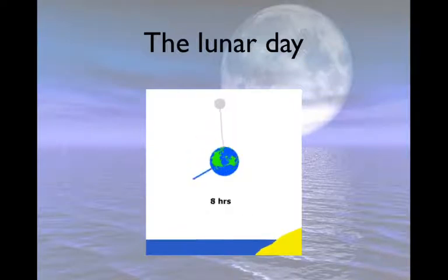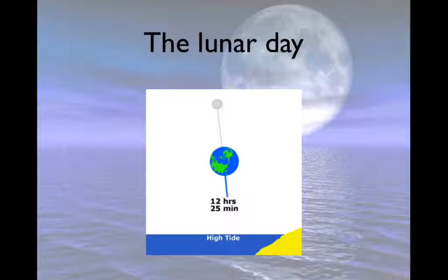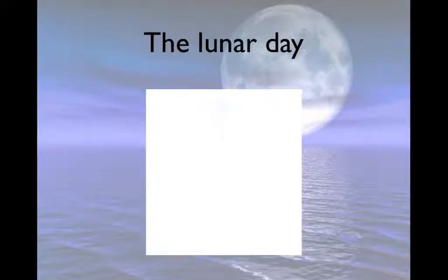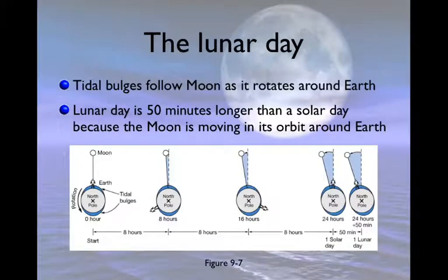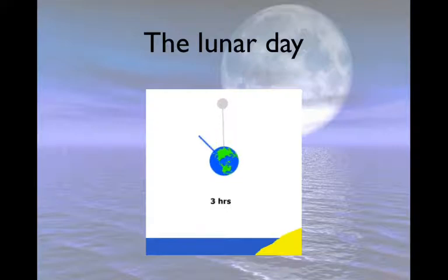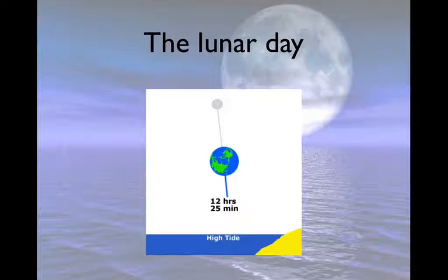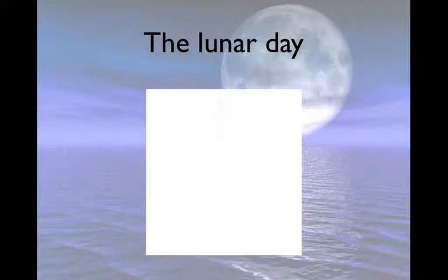And what I want you to take note of is in this little animation, when we're going to get to 24 hours in a minute, the Moon is directly overhead at 24 hours. The Moon is directly overhead, and while the Earth is rotating on its axis, the Moon is also rotating around the Earth. So in 24 hours, it hasn't caught all the way back up to where the Moon is. The Moon has moved approximately 50 minutes farther ahead. Which is why the lunar day is on a basis of 24 hours and 50 minutes.